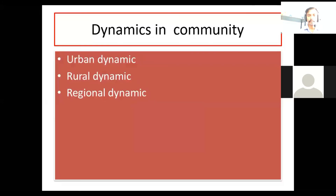Dynamics in community — for example, what are the changes in each type of community, including urban changes or urban dynamics, rural changes or rural dynamics, and regional changes or regional dynamics.